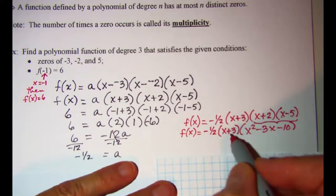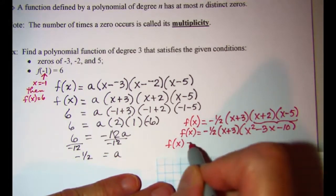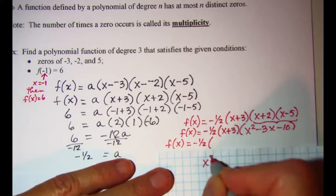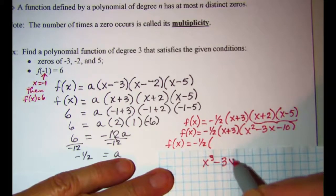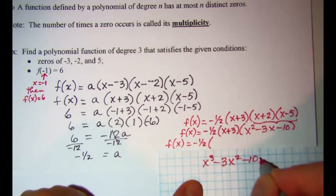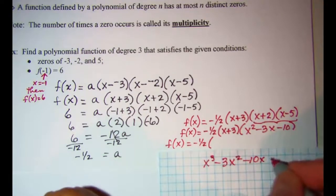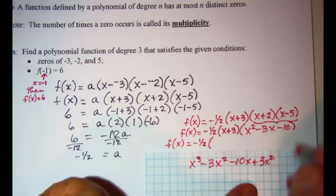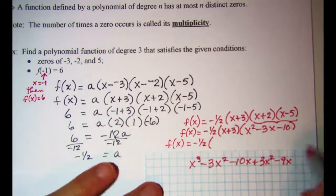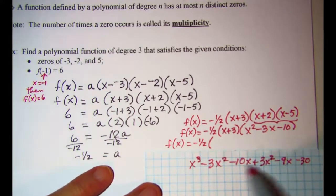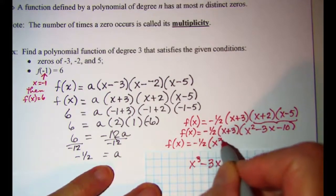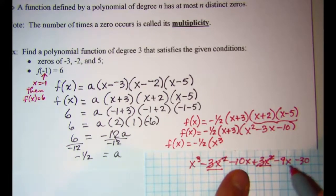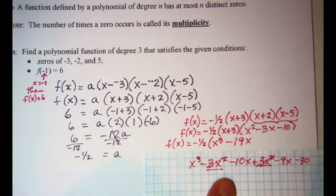Now let's multiply x plus 3 through. f of x equals negative one-half times: x times x squared is x cubed, x times negative 3x is negative 3x squared, x times negative 10 is negative 10x. Then 3 times x squared is 3x squared, 3 times negative 3x is negative 9x, and 3 times negative 10 is negative 30. Combining: x cubed, negative 3x squared and 3x squared cancel, negative 10x and negative 9x gives negative 19x, and negative 30.